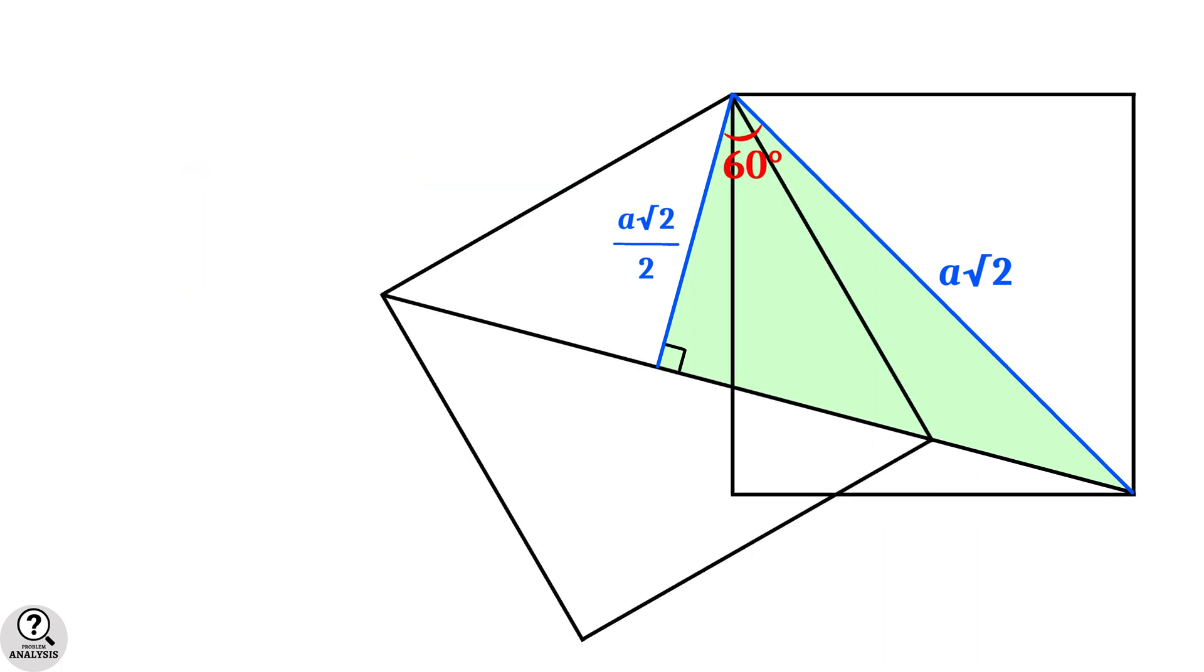Now come back to the actual figure. We know that the angle made by the diagonal of a square is 45 degree. Then it is clear from the figure that the green marked angle is 60 degree minus 45 degree equal to 15 degree.